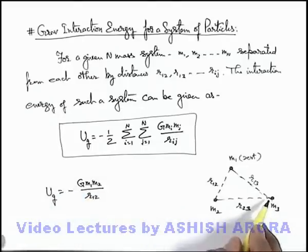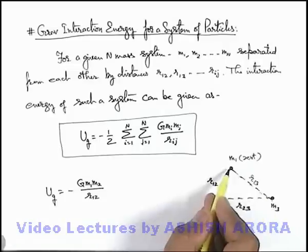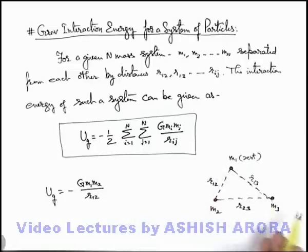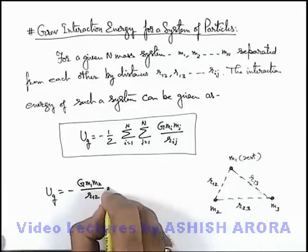And when m3 is now brought later, work has to be done against 2 forces: one is the gravitational force of m1 on m3 as well as gravitational force of m2 on m3. So in this situation, as gravitational field is a conservative field, we can simply write the independent works as work done depends only on initial and final position, not on the path.